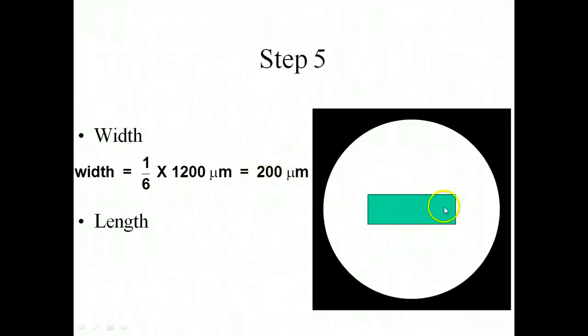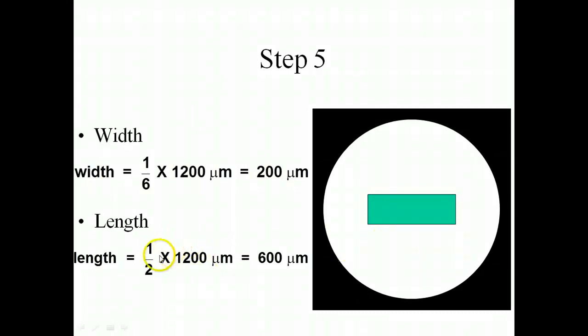Now if we want to estimate the length of this object, we simply have to say, okay, well, there's some space over here, there's some space over here, so we could estimate and say, yeah, it takes up about half our field of view under low power. So we take one-half times 1,200, which would give us our estimated size of 600 micrometers.